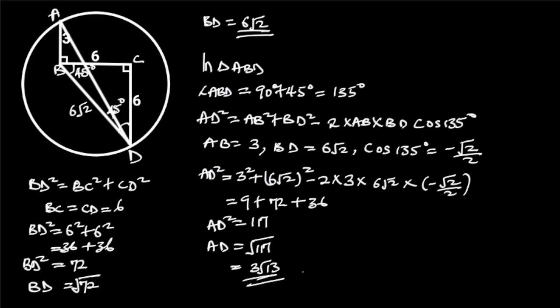Since AD is the diameter of the circle, it follows that the radius of the circle will be AD over 2, which is equal to 3 root 13 over 2.